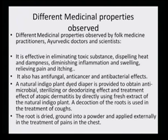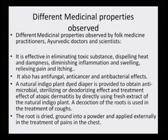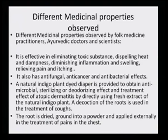A natural indigo plant dye diaper is provided to obtain antimicrobial, sterilizing and deodorizing effect and treatment of atopic dermatitis by directly using fresh extract of the natural dye plant. A decoction of the root is used in the treatment of cough. It is used for smearing on the diapers of children because it has anti-bacterial and anti-fungal properties and is very good for atopic dermatitis. The root dried and ground into powder is applied externally in the treatment of pain in the chest.